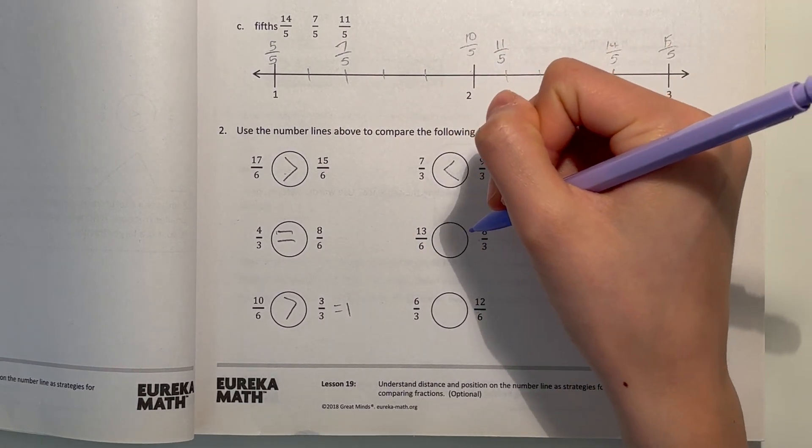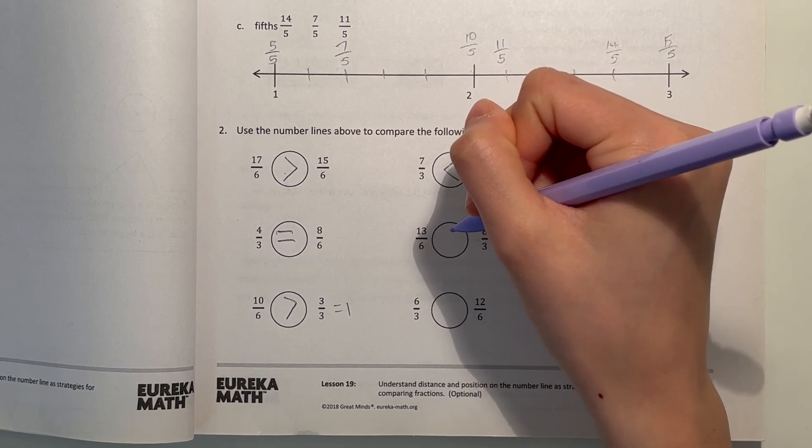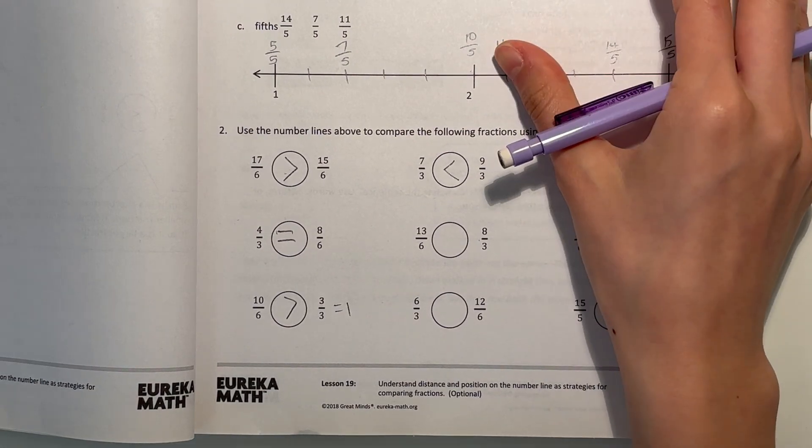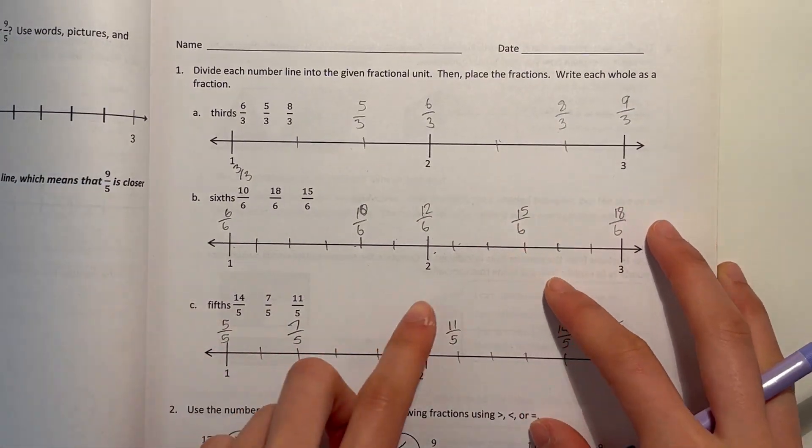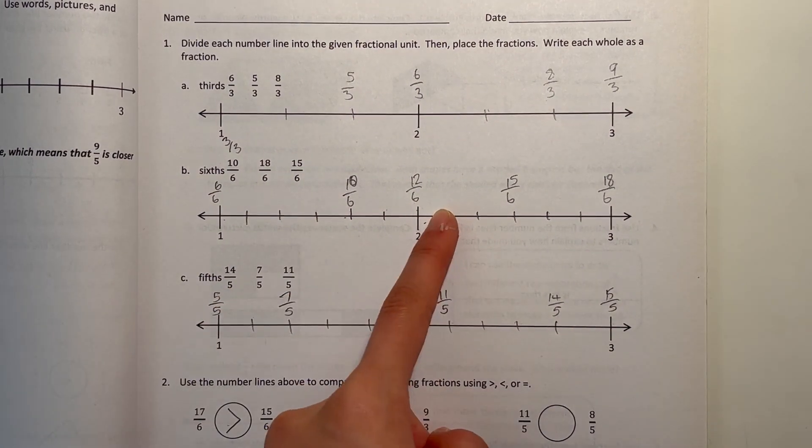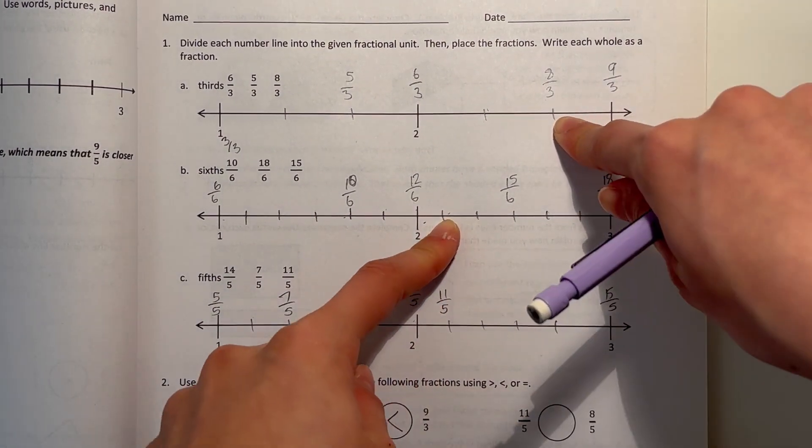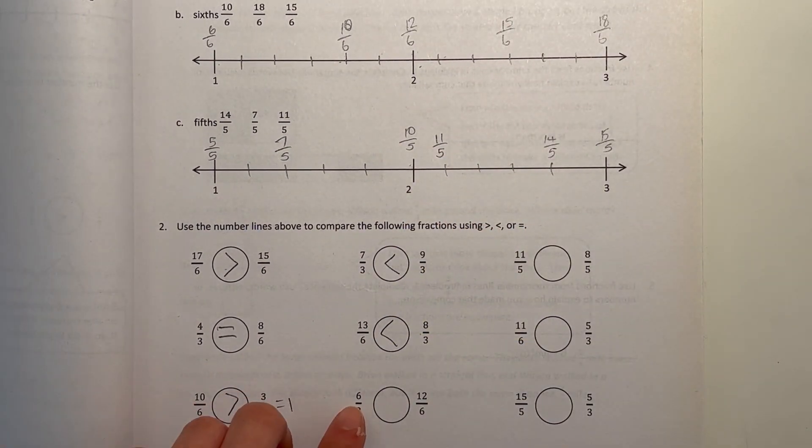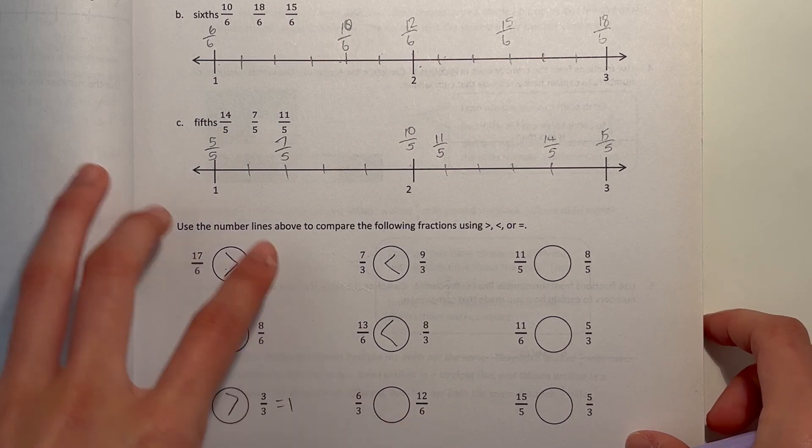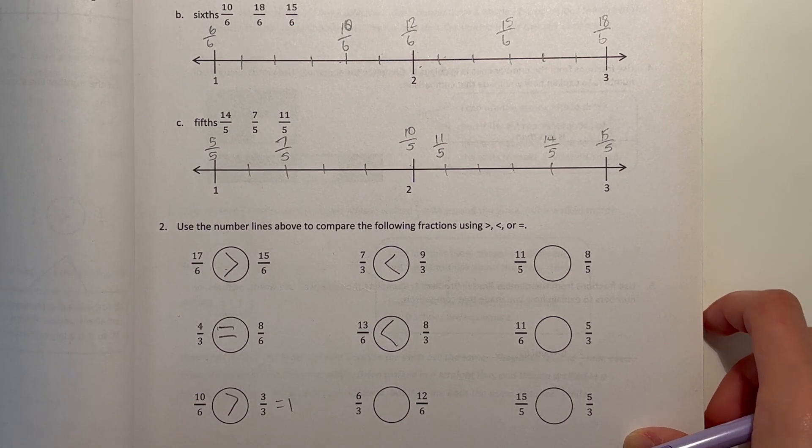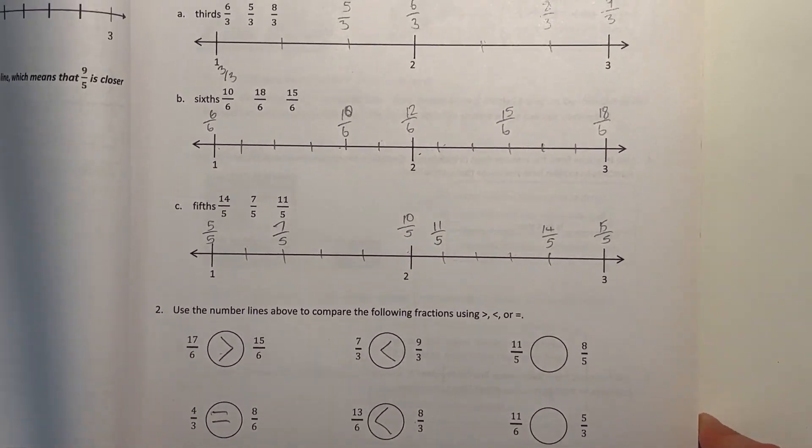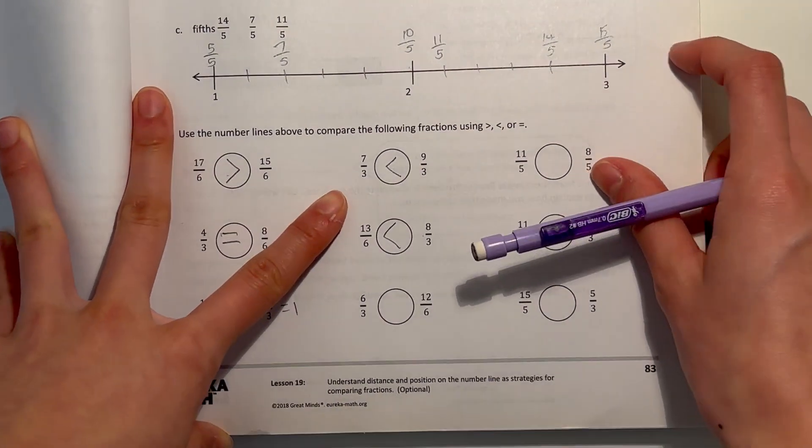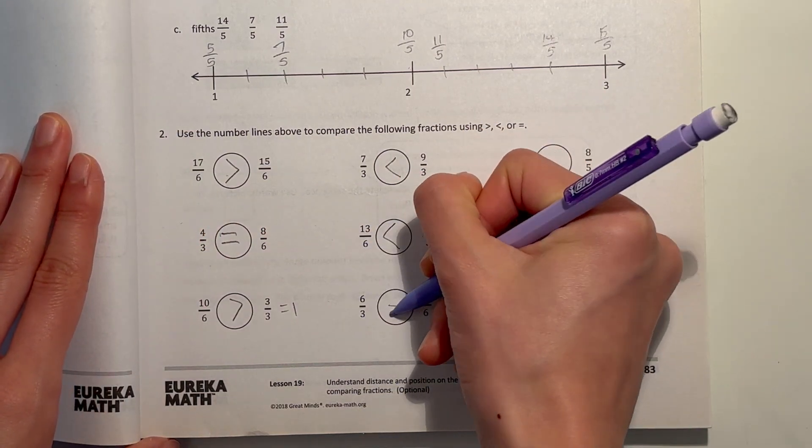And here we have 13 over 6 and 8 over 3. So 13 sixths would be right here. And 8 thirds is right here. So 8 thirds is obviously greater. And now 6 thirds and 12 over 6. Well, if you look up here, they're exactly equal. They're both equal to 2. So these two fractions are equal to each other.